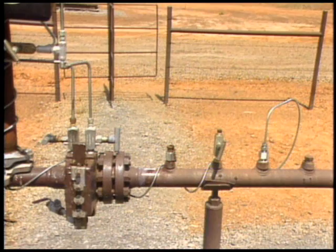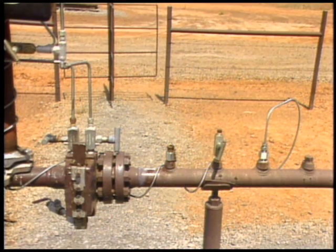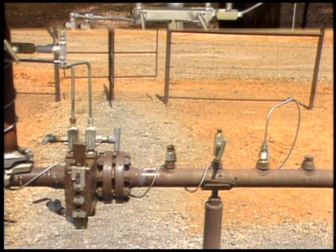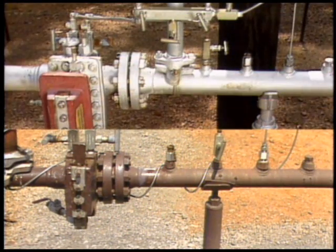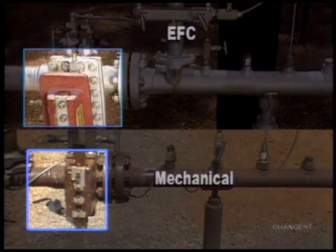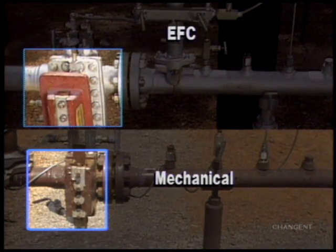Now let's examine and compare the components of electronic and mechanical flow systems. Both flow measurement systems have meter tubes with orifice plates.